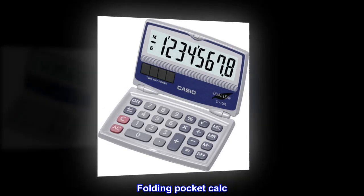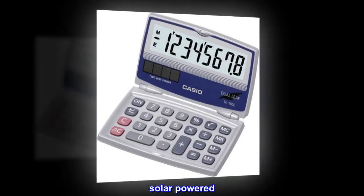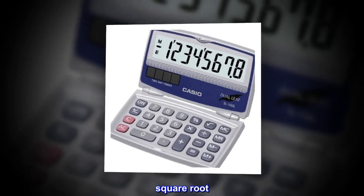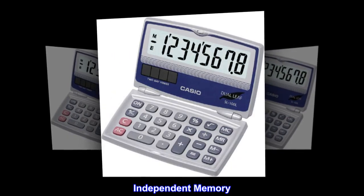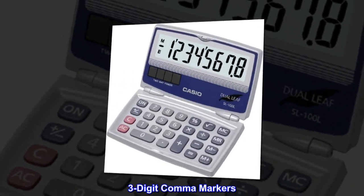Folding pocket calculator. Solar-powered. Square root. Large, easy-to-read 8-digit display. Independent memory. 3-digit comma markers.